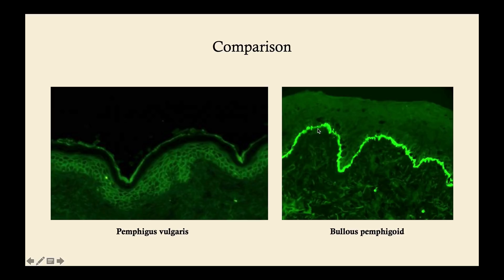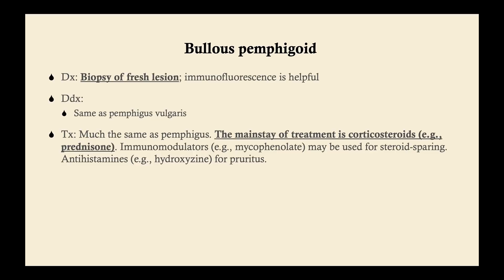The diagnosis for bullous pemphigoid is the same as pemphigus vulgaris — biopsy of a fresh lesion, not an erosion. Immunofluorescence is helpful. The differential diagnosis is the same as pemphigus vulgaris. The treatment is also very similar: the mainstay is corticosteroids, immunomodulators can be used for steroid sparing, and antihistamines can be used for the itching that often occurs with bullous pemphigoid.